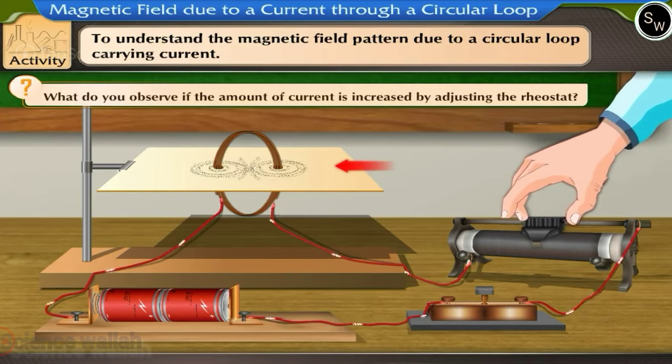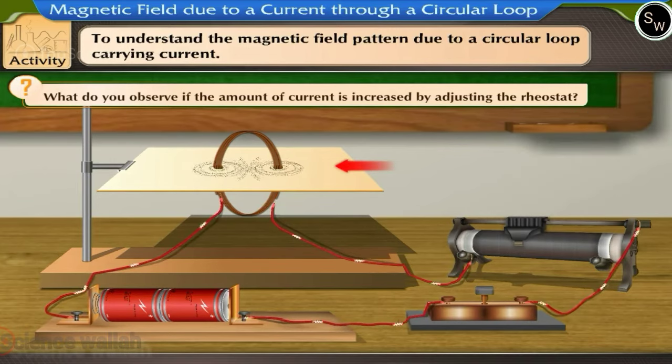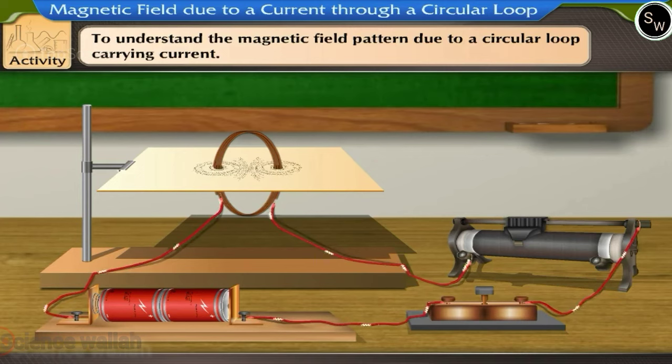in circular patterns of smaller radii, indicating an increase in the magnitude of the magnetic field. Let us study the magnetic field due to a current through a circular loop.